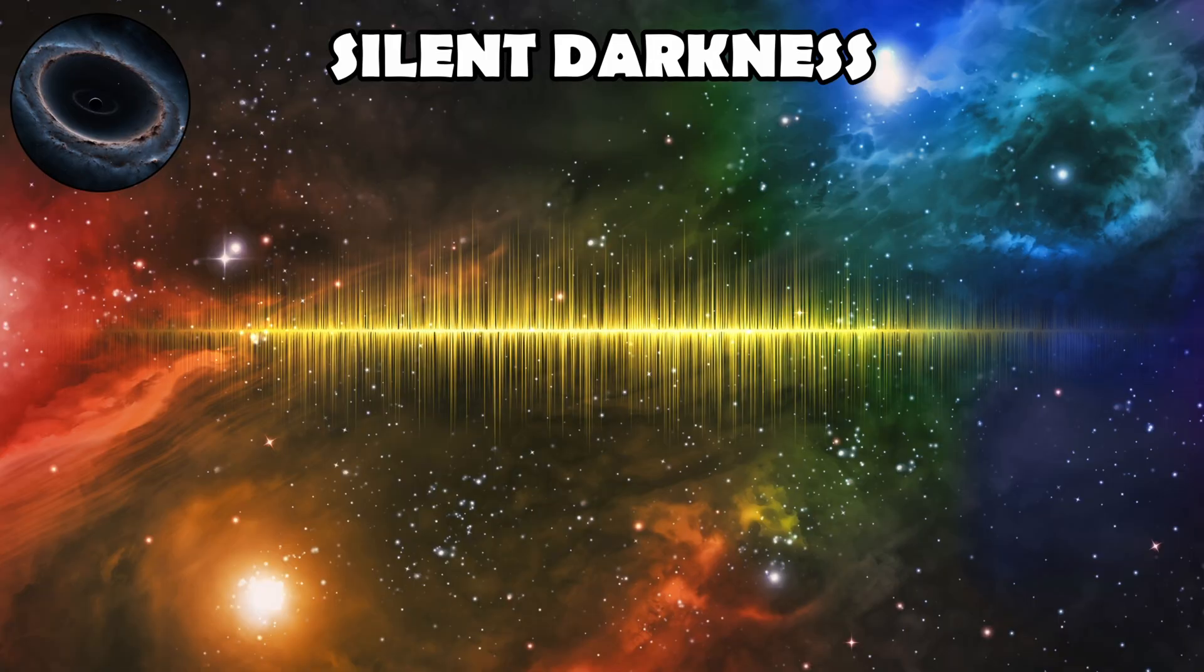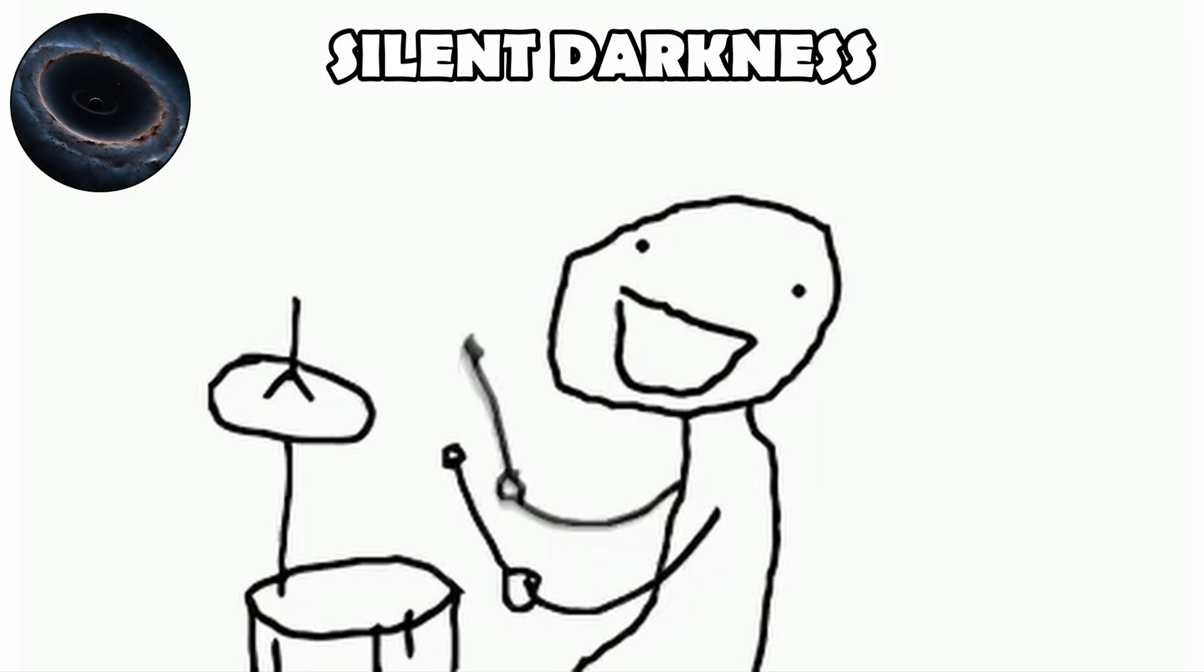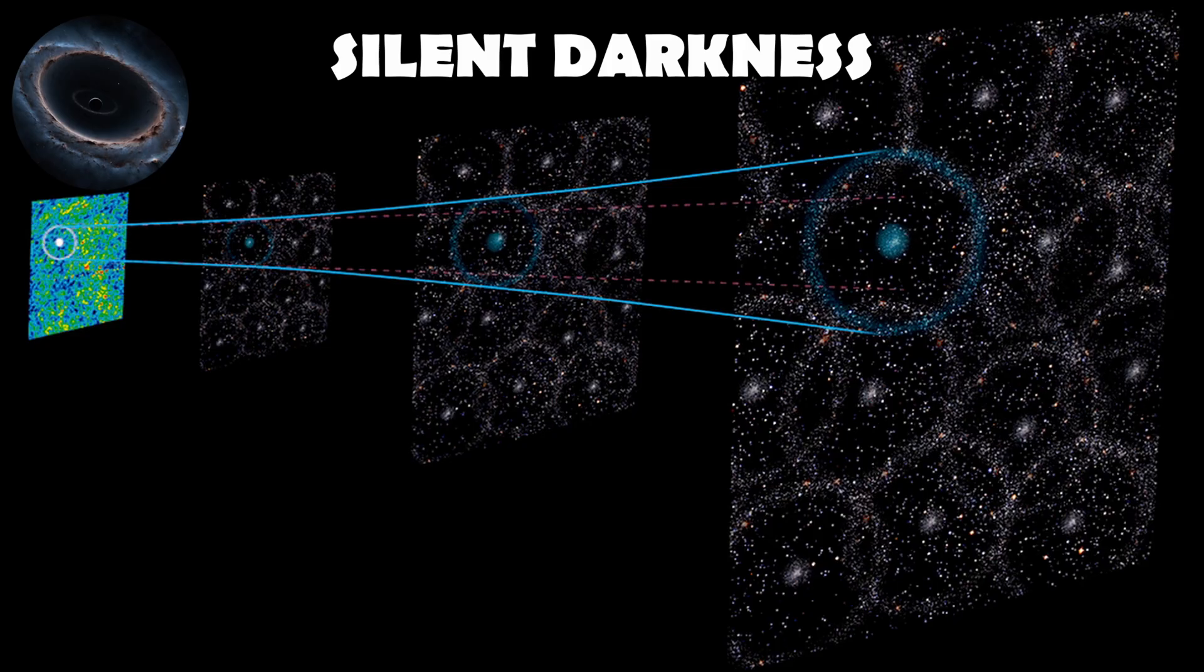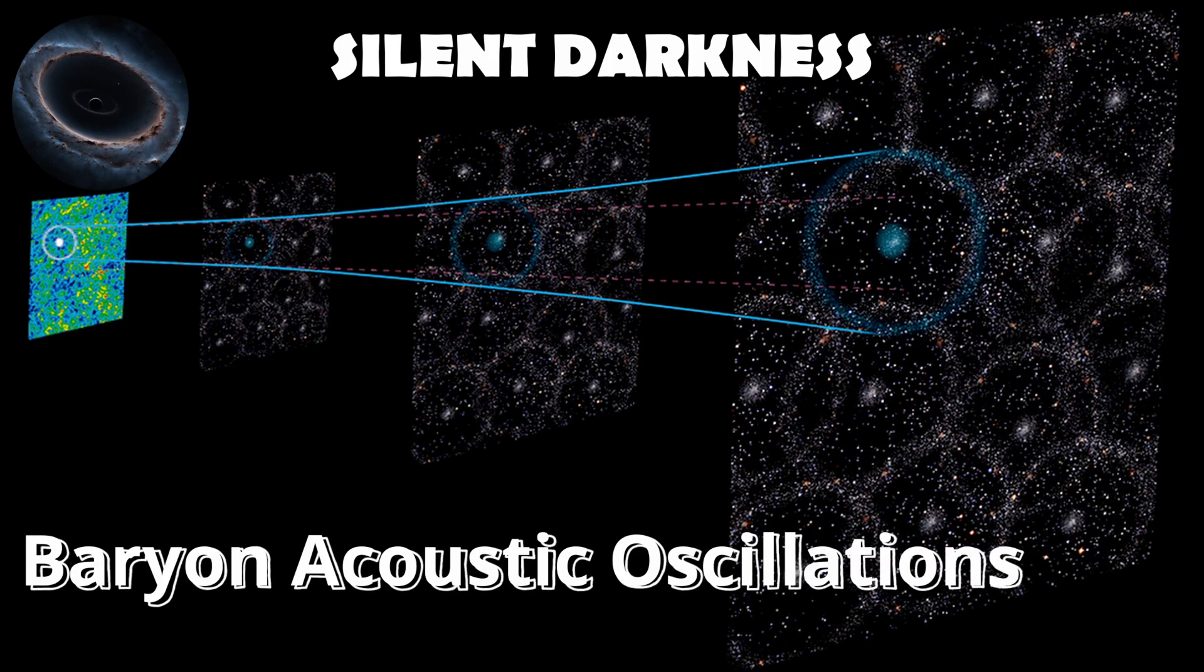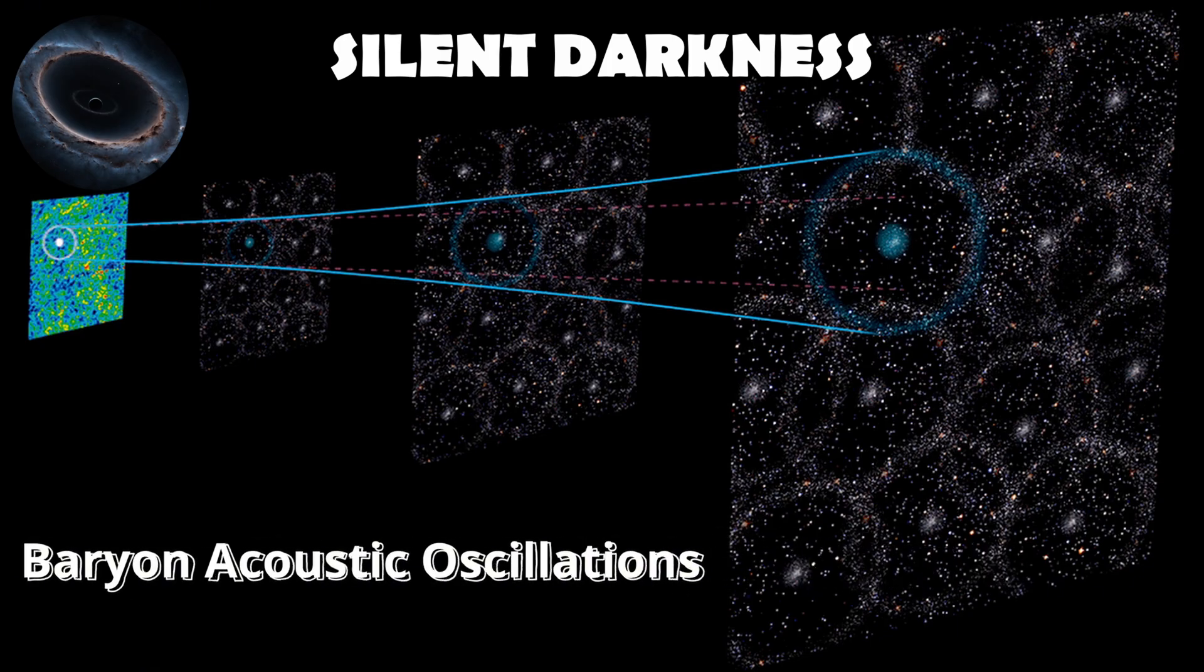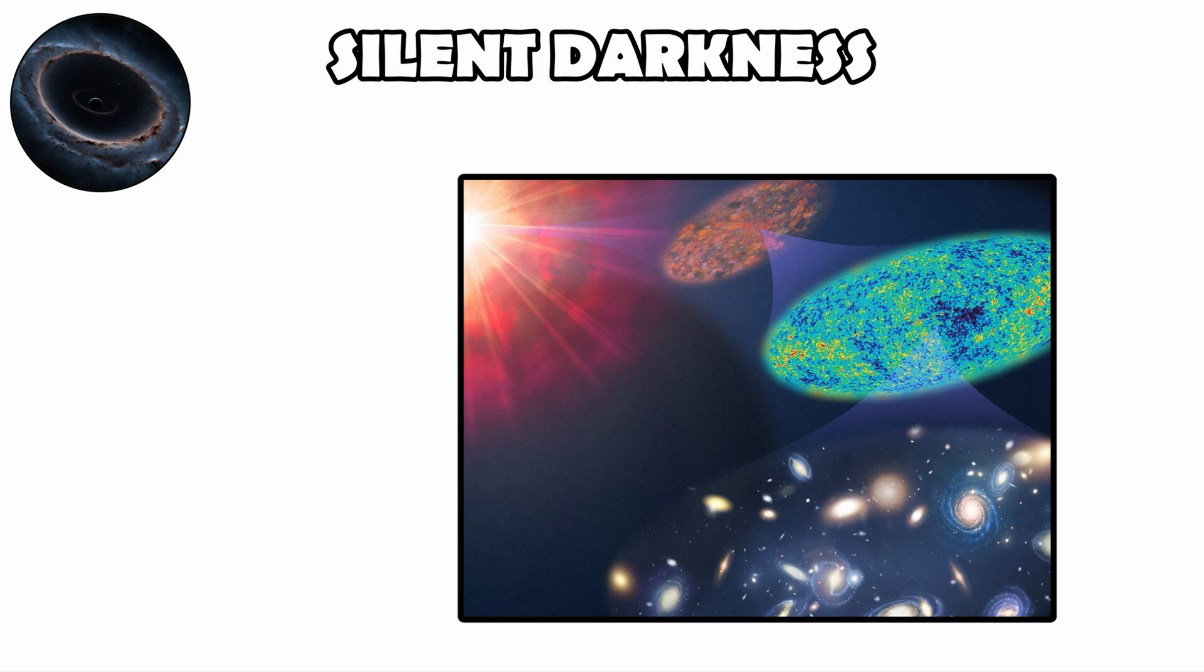Even sound waves rippled through the early plasma. These were pressure oscillations, like the ringing of a giant cosmic drum. The imprints of these waves survive today in the distribution of galaxies, in patterns known as baryon acoustic oscillations. Far from being silent, the young universe was full of motion, light, and energy.